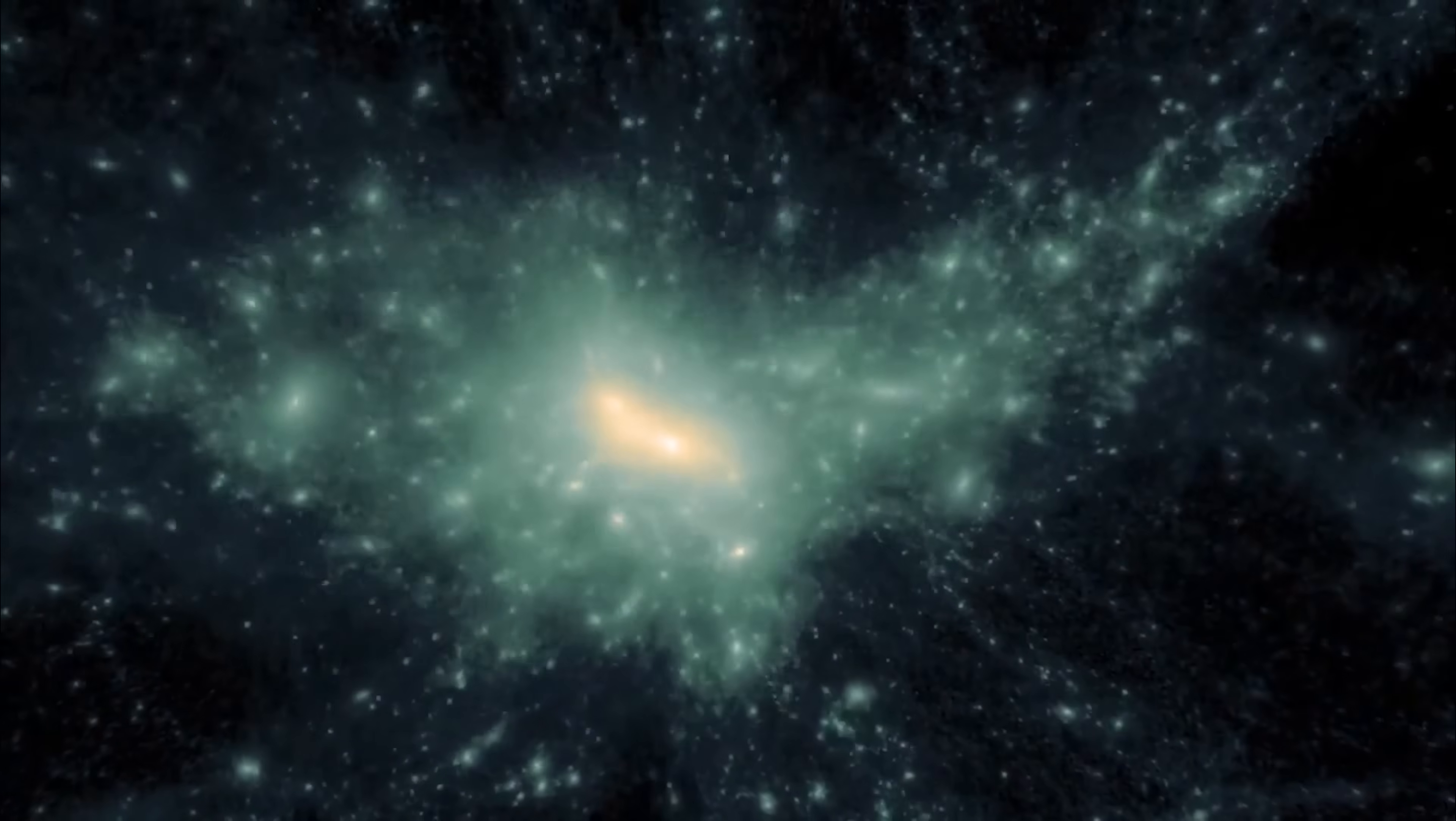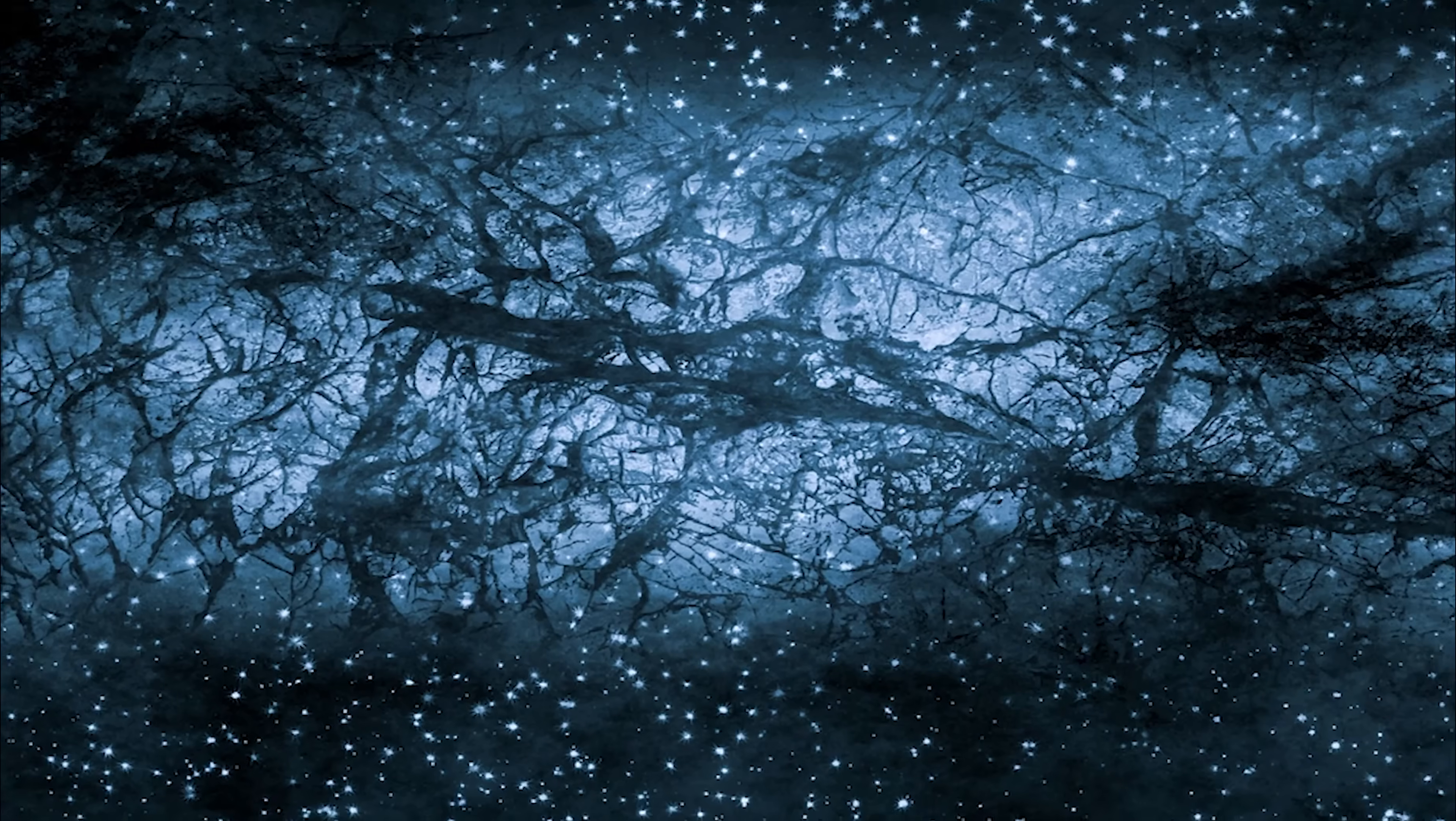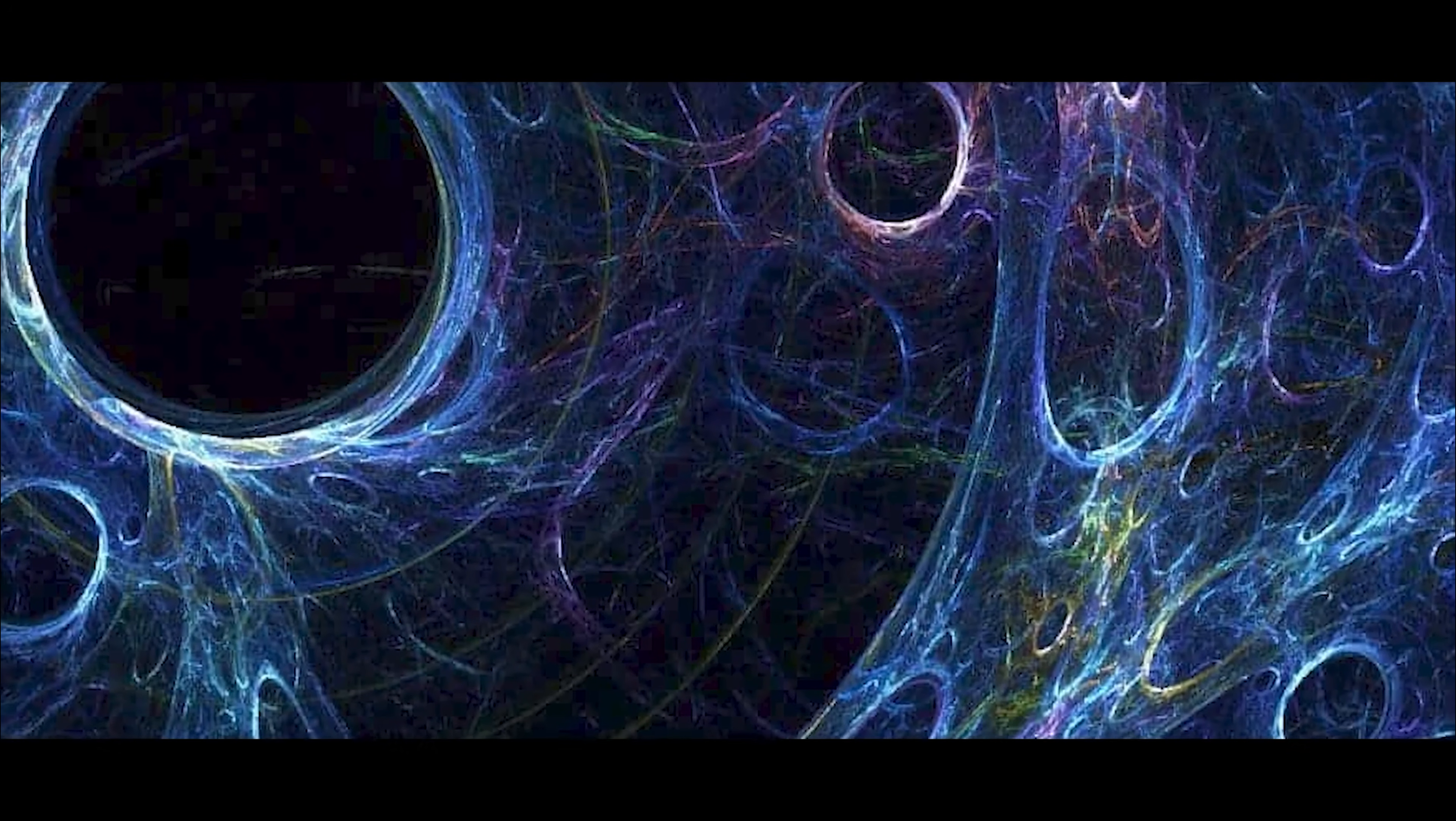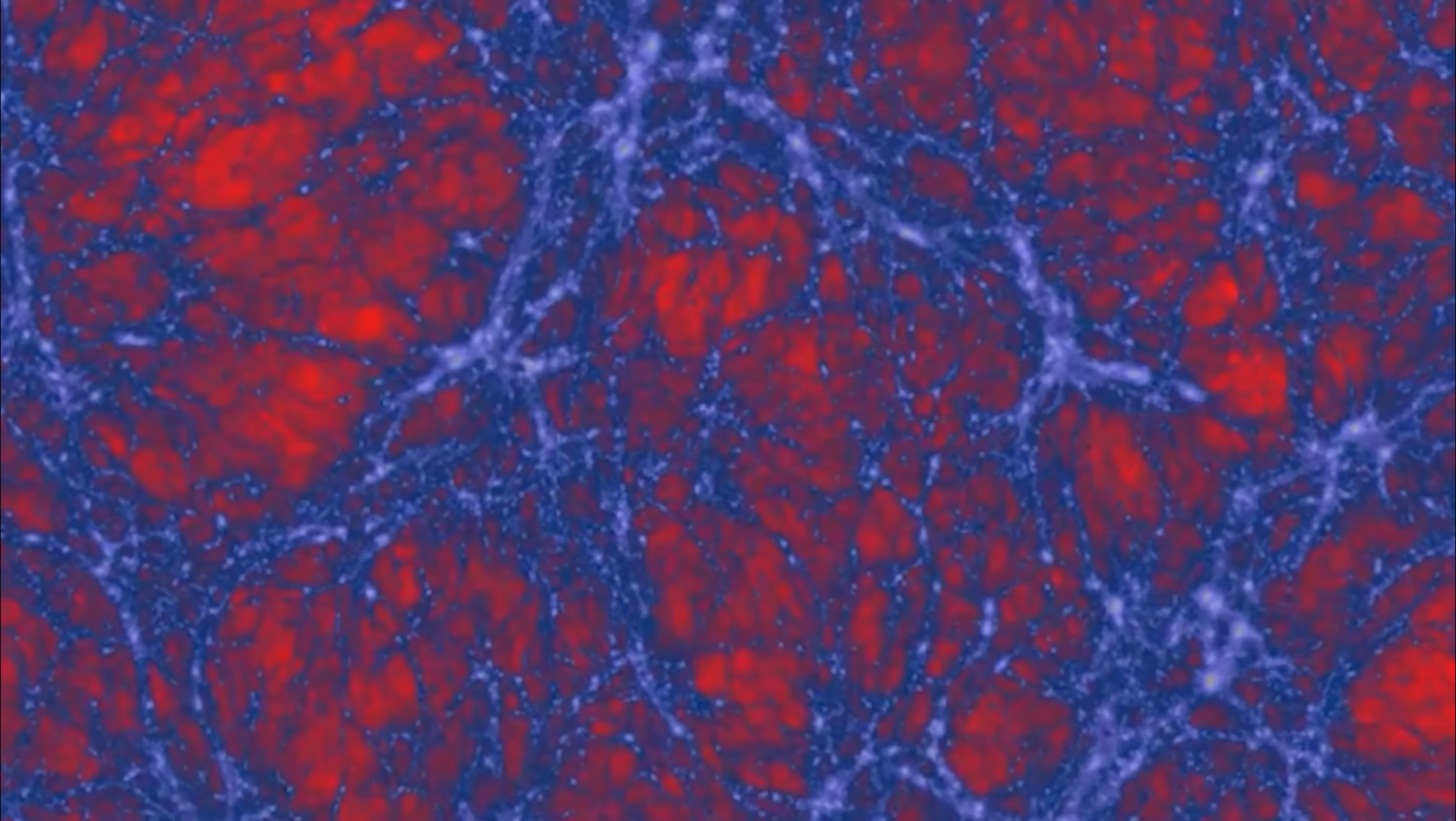Before we dive into the details of the study though, let's take a moment to go over the basics. So what exactly is dark matter? Dark matter is massive, it has gravity, but it's invisible. It has no interactions with light or the electromagnetic force. In simple terms, it's a theoretical form of matter that doesn't shine, reflect, or absorb light. It only reveals itself through gravity. That's why it's been so hard to pin down.